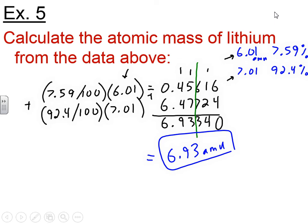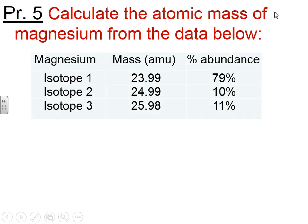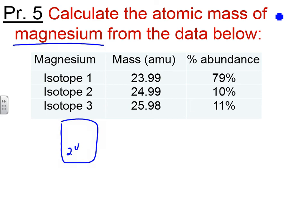Go ahead and try it on your own — do this calculation for magnesium. Pause the video; it shouldn't take too long. Then take a look at magnesium on the periodic table. Hopefully you'll find that the mass of magnesium is 24.31 AMU.